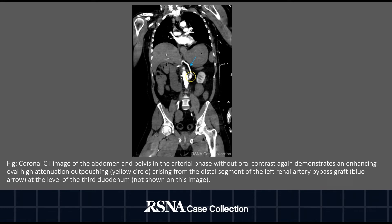The coronal CT image of the abdomen and pelvis in the arterial phase without oral contrast again demonstrates an enhancing, high attenuation, oval outpouching shown in the yellow circle. This area of high attenuation arises from the distal segment of the left renal artery bypass graft at the level of the third duodenum, although the third duodenum is not shown on this slice. The distal segment of the left renal artery bypass graft is annotated with a blue arrow.